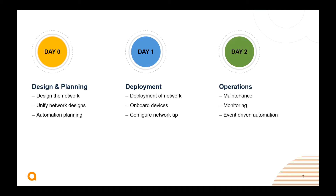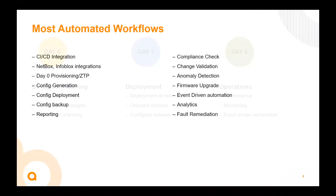Lastly, we have day two — but really it could be day three, day 100, almost like day N. This is the continuous operations category: the ongoing maintenance and monitoring of the network, as well as the utilization of event-driven automation to help add reactive capabilities to occurrences and anomalies detected in that network. Across these categories, there are multiple use cases that can be seen as automation workflows.